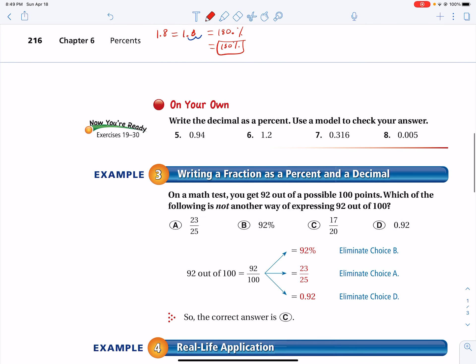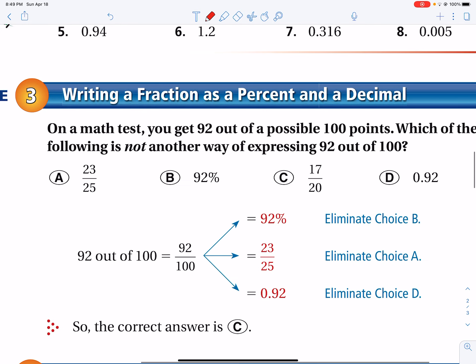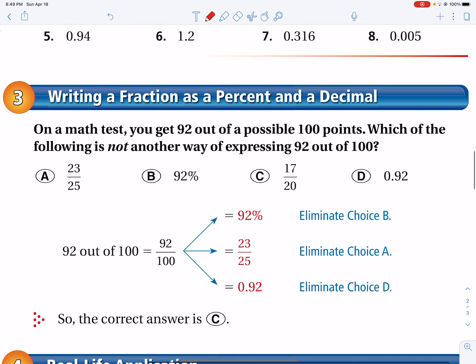Now, example three says writing a fraction as a percent and a decimal. So writing a fraction as a percent and a decimal. So we saw something like this before, right? We saw that if we take a look at some examples here, let's just read them, see what it says. It says on a math test, you get 92 out of a possible 100 points. Which of these followings is not another way of expressing 92 out of 100?